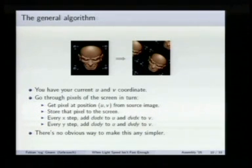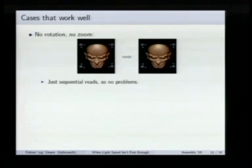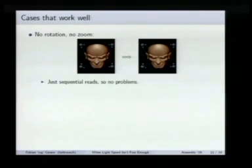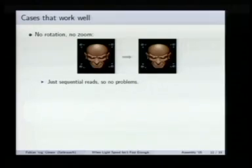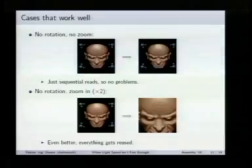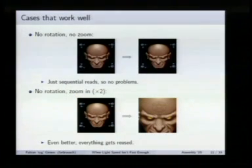Cases that work well are obviously no rotation and no zoom — we're basically just copying the image. We have the same characteristics as copying images: just sequential reads, no fancy stuff, no problems. Similarly, when we just zoom in, we're accessing the same pixels two or four times, which is even better. Everything that's in the cache gets reused multiple times, so we get big gains from the cache here.